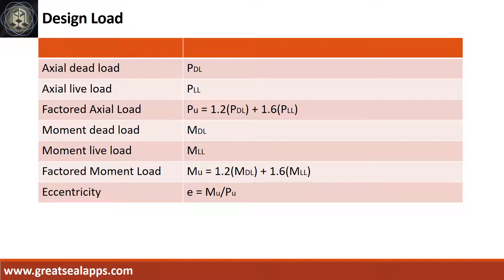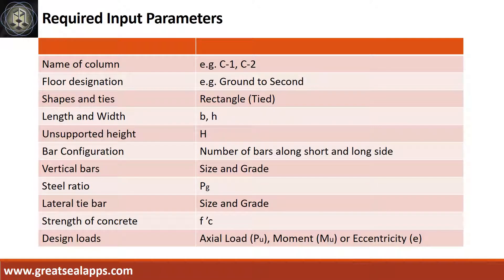Get the factored axial load from the axial dead load and the axial live load, and the factored moment from moment dead load and moment live load, then solve the eccentricity. Enumerate the input parameters required.